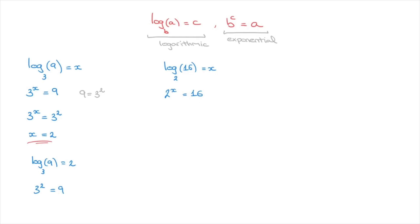So let's try and write the right-hand side as a power of 2. If you don't know how to write 16 as a power of 2 right away, here's a quick trick. We know that 16 is equal to 4 to the power of 2, and in turn, we know that 4 is equal to 2 to the power of 2. So combining these two results, we can say that 16 equals to, in parentheses, 2 to the power of 2, raised to the power of 2. And now these powers multiply together, so that gives us 16 equals to 2 to the power of 4.